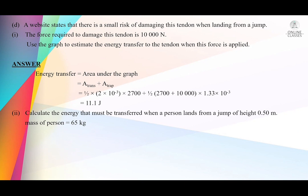Part E: calculate the energy that must be transferred when a person lands from a jump of height 0.5 m. The mass of the person is given. They ask for energy transferred — that is mgh, the change in gravitational potential energy: ΔE = mgΔh. Working it out gives 319 Joules.